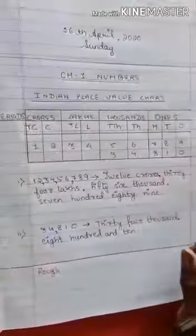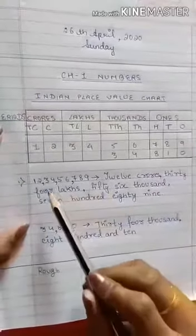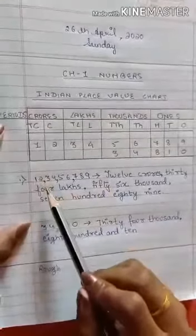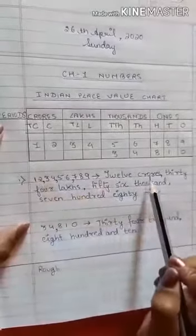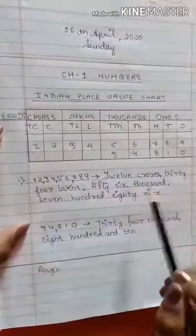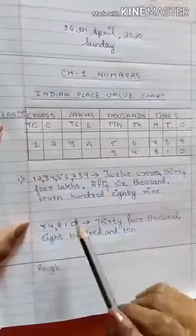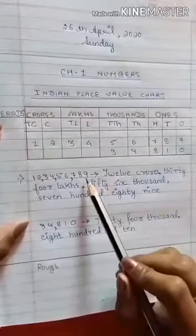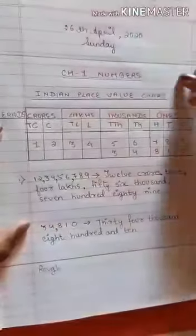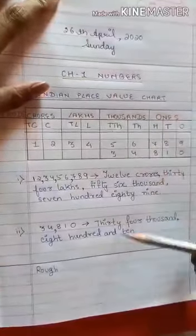You can see this is in the crores period. So this is twelve crore thirty-four lakhs fifty-six thousand seven hundred and eighty-nine.